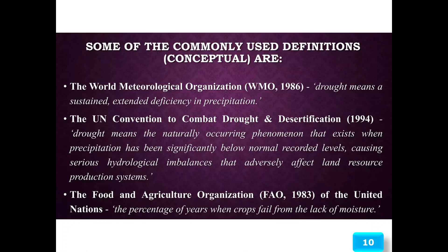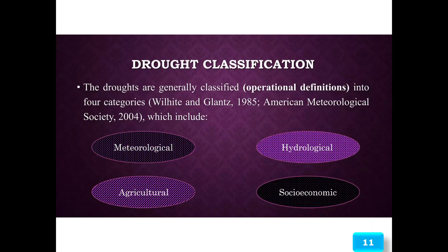The Food and Agricultural Organization of the United Nations (1983) defines drought as the percentage of years when crops fail from the lack of moisture.